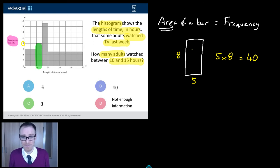And that's my answer. My area of the bar is the frequency. 40. Is that one of my options? Yay. There it is there. 40. So I'm sorted. But wait a minute. Before you think you'll knock off early and have a cup of tea.